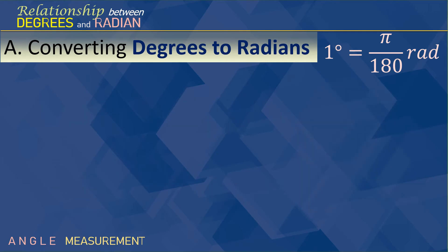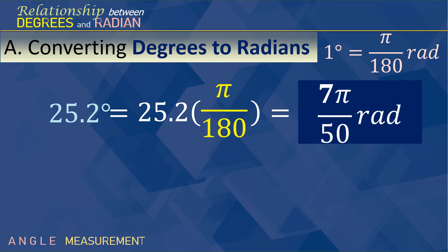Let's have this. 25.2 degrees. We multiply that to pi over 180. And we have 7 pi over 50 radians.